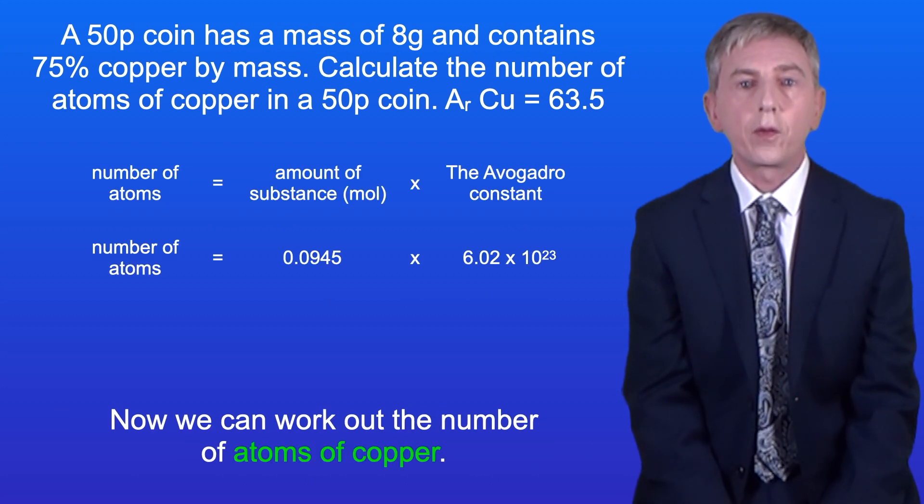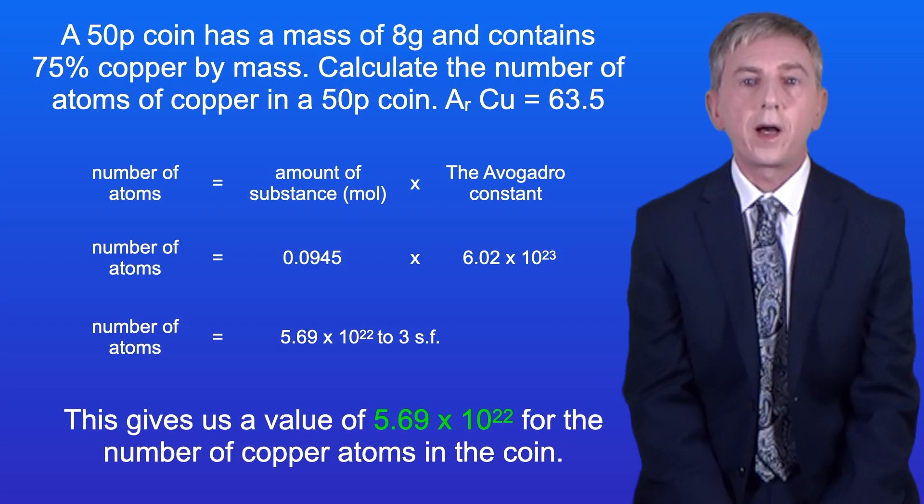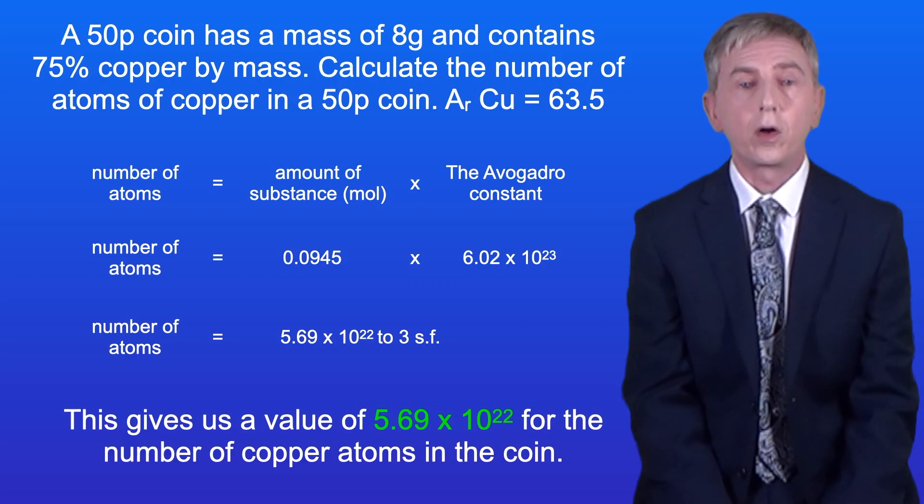Okay now we can work out the number of atoms of copper and to do this we multiply the amount in moles by the Avogadro constant. And this gives us a value of 5.69 times 10 to the power of 22 for the number of copper atoms in the coin.